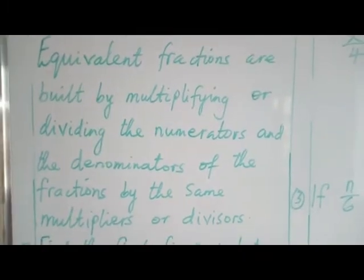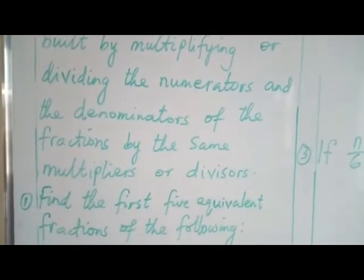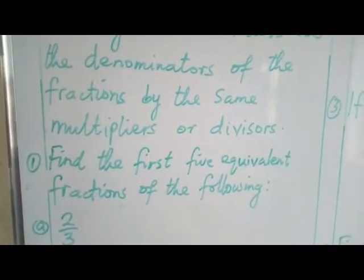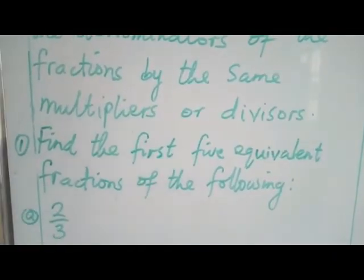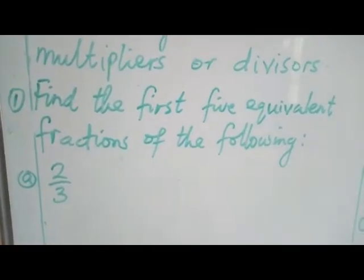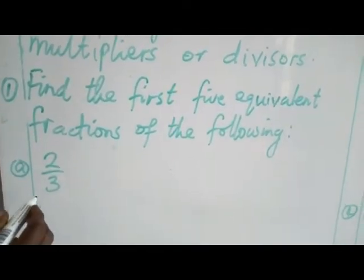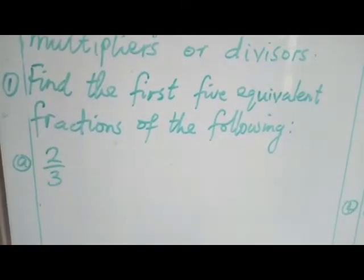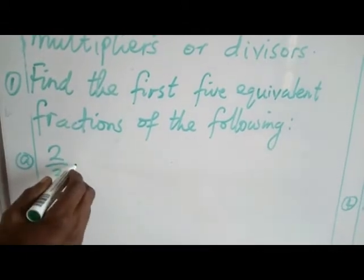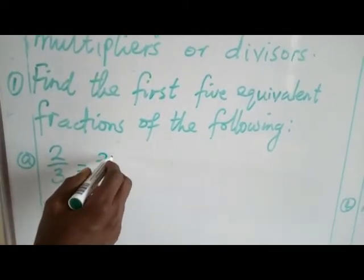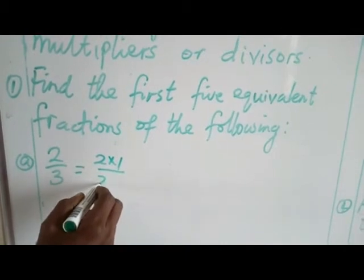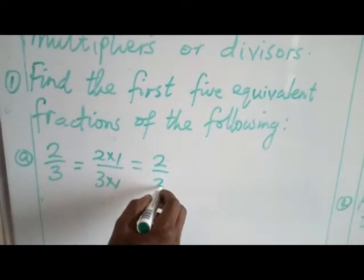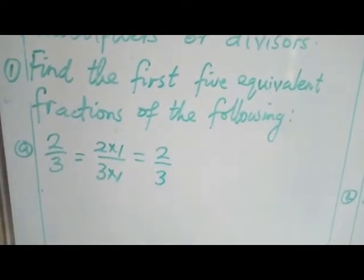We are going to look at some examples of how Equivalent Fractions are being solved. Example 1 says, find the first 5 equivalent fractions of the following numbers. The first number given is 2 over 3. 2 over 3 is already the first equivalent fraction because I am going to use this method by multiplying 2 times 1 all over 3 times 1. So 2 times 1 gives us 2 over 3. This is the first equivalent fraction of this number.